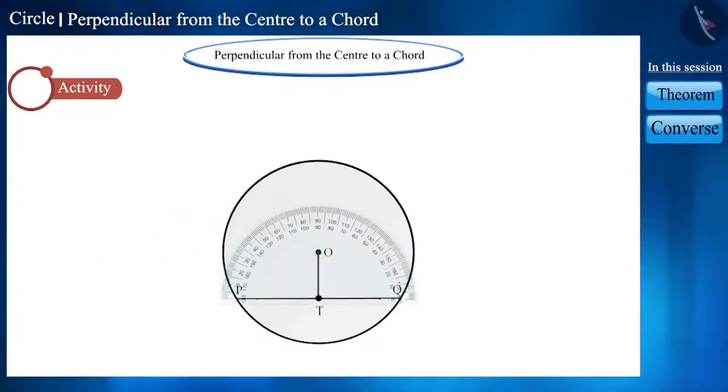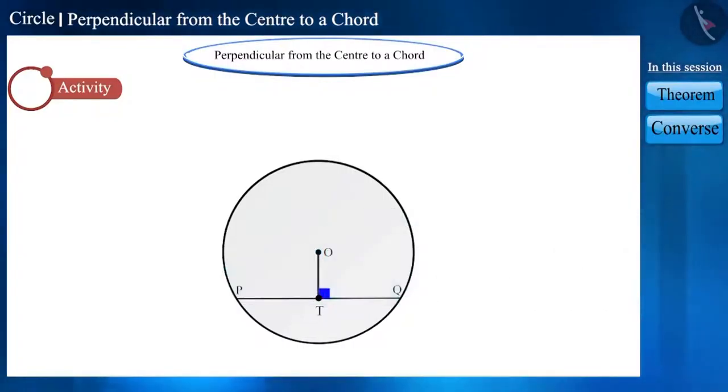Now, with the help of a protractor, find the measurement of these angles. Friends, you can see that the measure of these angles is 90 degrees. That is, they are right angles. Now we can say that line segment OT is perpendicular to chord PQ.